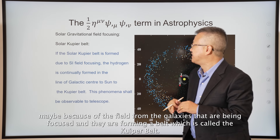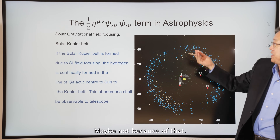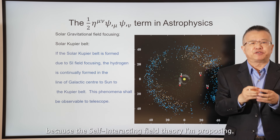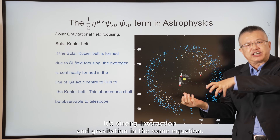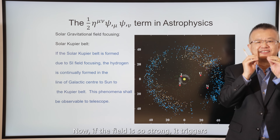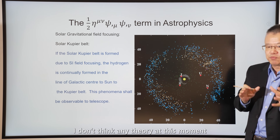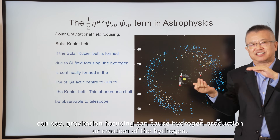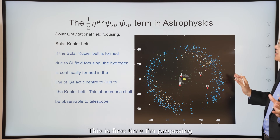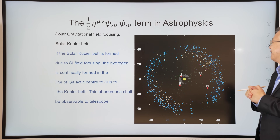This is the Kuiper Belt - is this real? People may question it. What's interesting is that in the self-interacting field theory I'm proposing, strong interaction and gravitation are in the same equation. If the field is so strong it triggers strong interaction, it causes the formation of hydrogen. I don't think any theory at this moment can say gravitational focusing causes the production or creation of hydrogen. This is the first time I'm proposing whether the Kuiper Belt forms because of that.